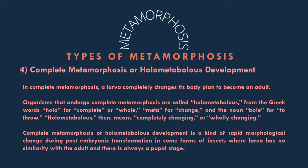Some scientists believe that the larval stage of complete metamorphosis may have evolved from insects which hatch from their eggs without developing properly. Some of these embryos may have survived long enough to find food in the outside world, and this may have ended up giving them an advantage, as they would be able to feed longer and gain more strength than their peers before metamorphosing into an adult stage.